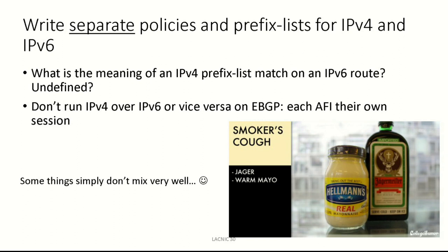Another hint: write separate policies for IPv4 and IPv6. Even though it is technically possible to announce v4 routes over a v6 BGP session, and some operating systems allow mixed prefix lists, it's like warm mayonnaise and Jägermeister — it does not taste well when mixed together. Set up separate BGP sessions for v4 and v6, separate defined routing policies for v4 and v6, and separate prefix lists for v4 and v6. This will greatly simplify your provisioning and debugging process.